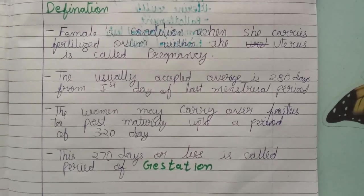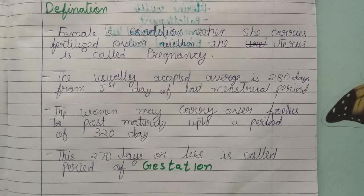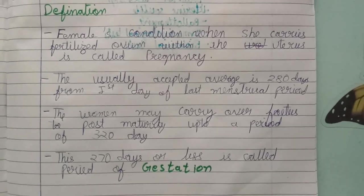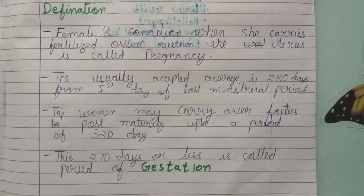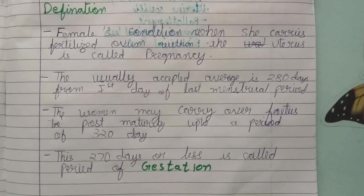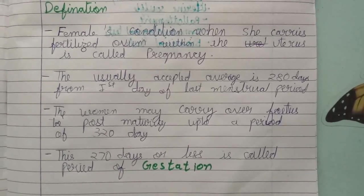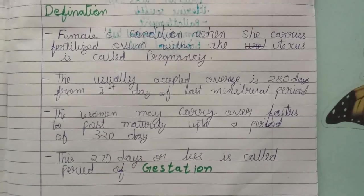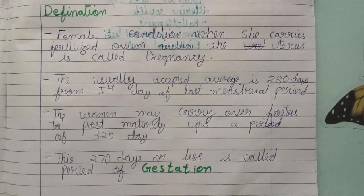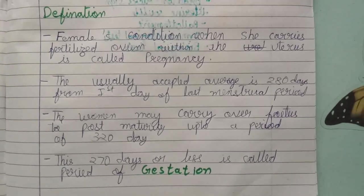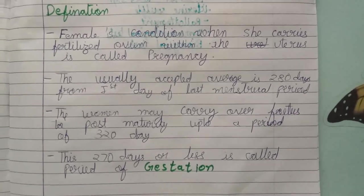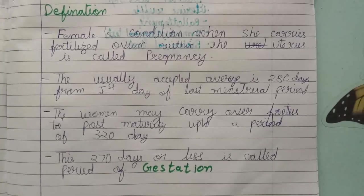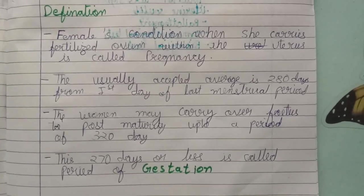The usually accepted average is 280 days from the first day of the last menstrual period. The woman may carry the fetus to post-maturity up to a period of 320 days. 270 days or less is called the period of gestation.